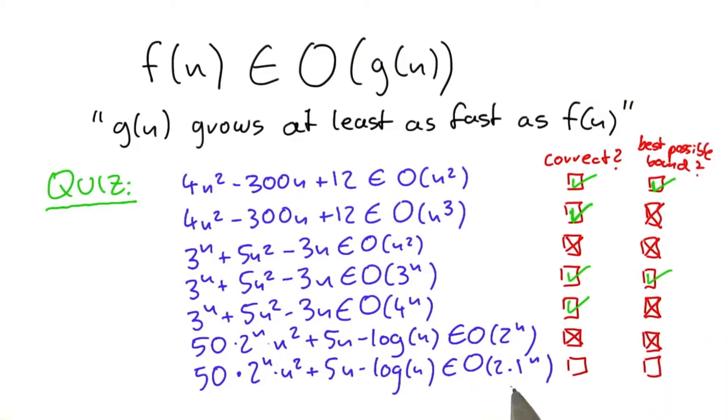Now this one down here is probably a little bit tricky because 2.1 to the power of n indeed grows faster than 2 to the power of n times n squared. So if you plot those two functions, you can see that 2.1 to the power of n will outgrow this part here, 2 to the power of n times n squared. So it is a correct bound.